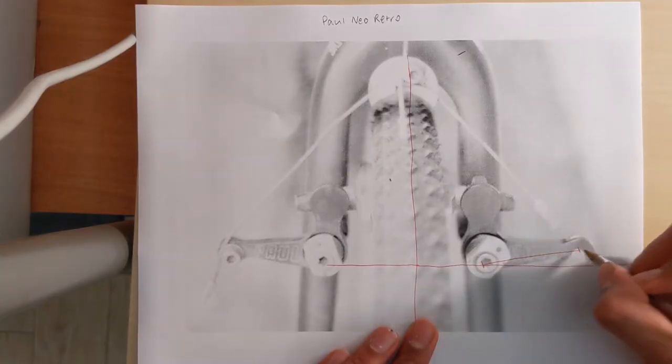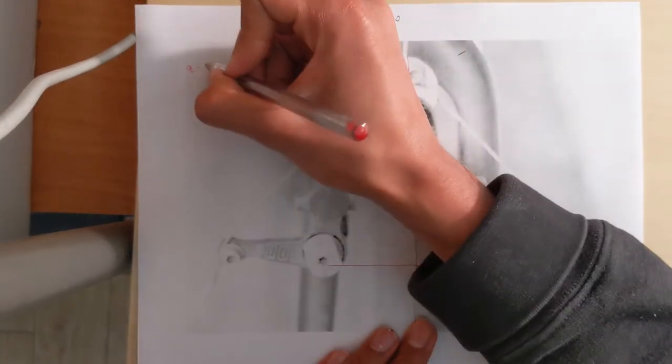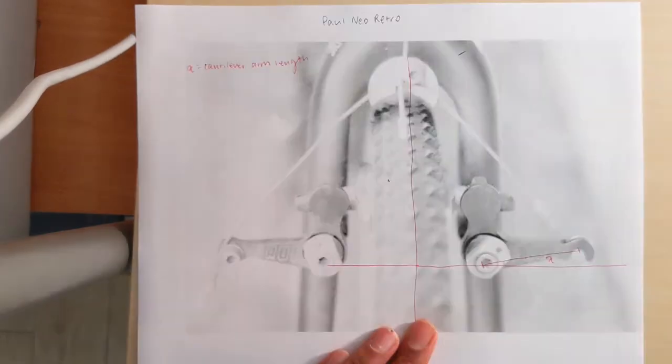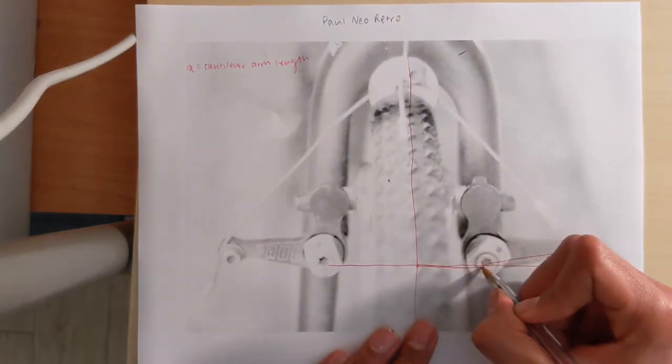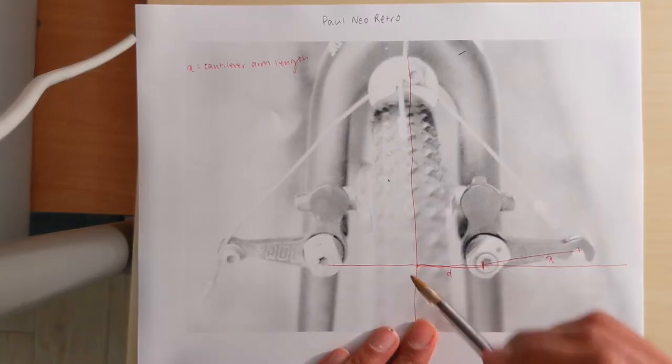This is x. x is our cantilever arm length. This is d. d is half the distance between the brake bosses, or d is the distance between the pivot bolt and the center of the bike.